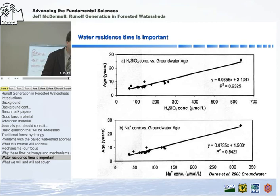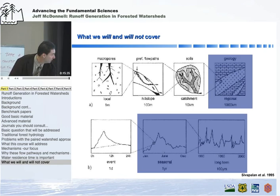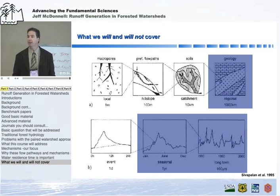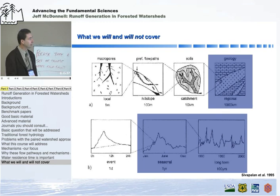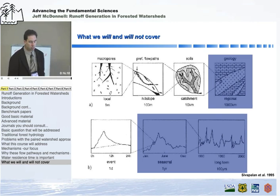Please interrupt me with any questions if I'm using terms or jargon that's unfamiliar. In terms of what we're going to cover and what we're not: we'll look at scales from plot to hillslope to catchment, but we're not going to address the regional scale or look deep into the subsurface at hydrogeological problems. In terms of time scales, we'll focus mostly on events and look much less at seasonal and long-term variations — events are our focus, at scales from the plot up to the experimental catchment.